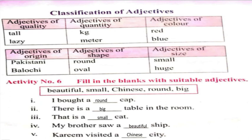Classification of Adjectives: Adjectives of Quality — such as Tall and Lazy; Adjectives measured in Kg and Meter; Adjectives of Colour — such as Red and Blue; Adjectives of Origin — such as Pakistani and Baluchi; Adjectives of Shape — such as Round and Oval; Adjectives of Size — such as Small and Huge.